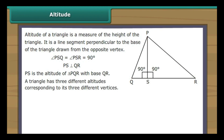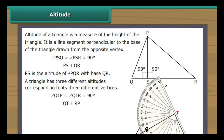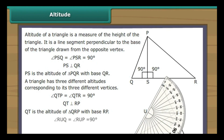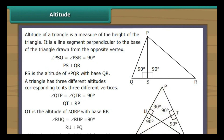A triangle has three different altitudes corresponding to its three different vertices. We draw a line segment from Q perpendicular to RP at point T; it intersects RP at right angles. Therefore QT is the altitude of triangle QRP with base RP. We draw another line segment from R perpendicular to PQ at point U; it intersects PQ at right angles. Therefore RU is the altitude of triangle RPQ with base PQ.